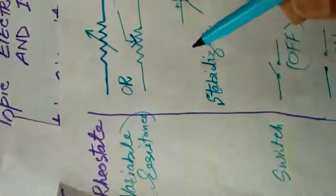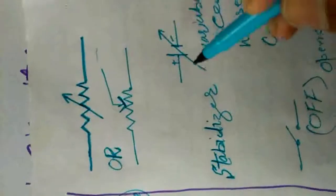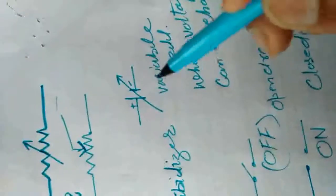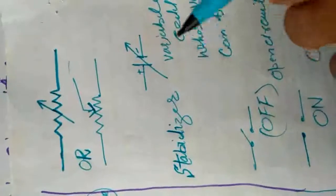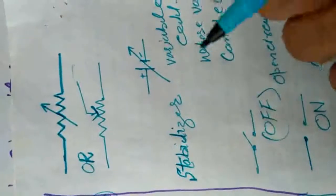A few more points about the rheostat: if we take a cell and place an arrow across it, then the potential and resistance of that cell can also be changed. This is then called a variable cell — a cell whose voltage can be changed. For example, the stabilizer used with refrigerators and inverters is also a kind of rheostat, as it has variable resistance and variable voltage to stabilize the supply.